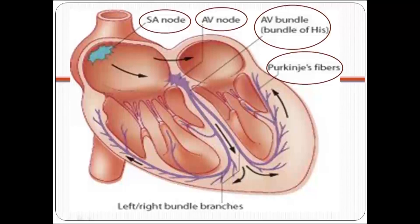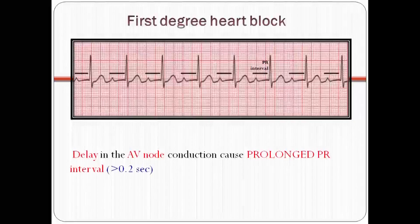I will continue with conduction disorders. Normally, the impulse originates from the SA node, then goes to the AV node. There is a delay in the AV node of less than 0.2 seconds, then it continues to the bundle of His, then to the Purkinje fibers. In first degree heart block, the delay in the AV node is prolonged — it takes more than 0.2 seconds.